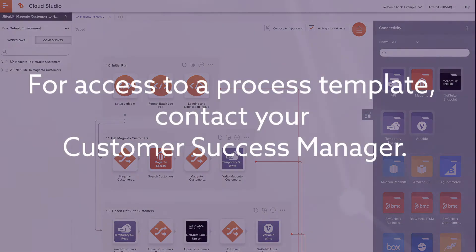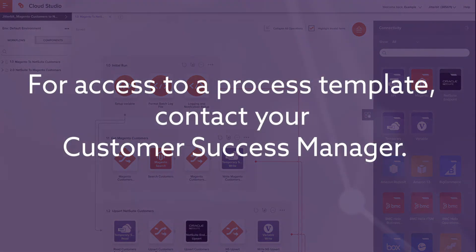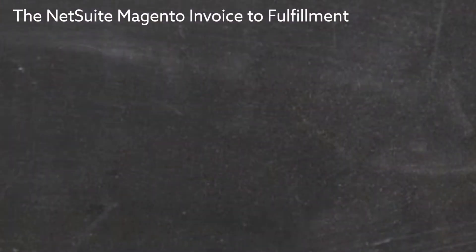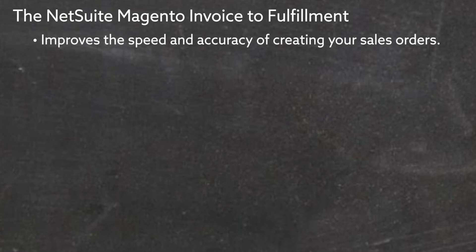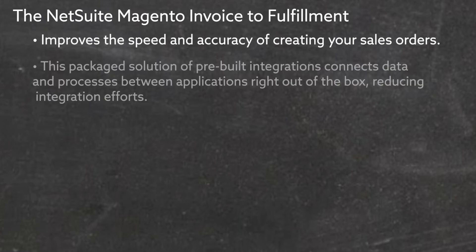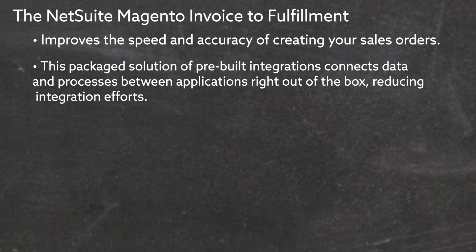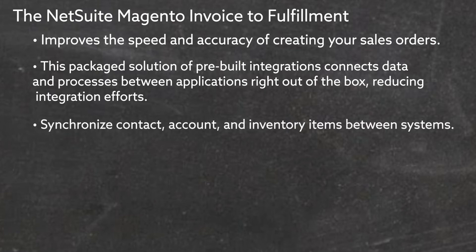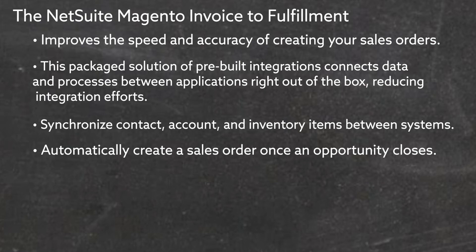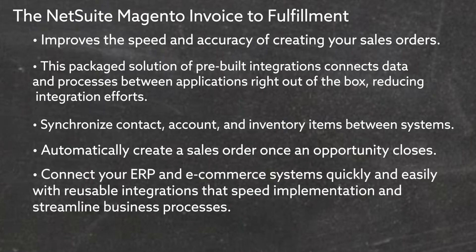For access to a template, contact your customer success manager. The NetSuite Magento invoice to fulfillment process template improves the speed and accuracy of creating your sales orders. This package solution of pre-built integrations connects data and processes between applications right out of the box, reducing integration efforts. Synchronize contact, account, and inventory items between systems. Automatically create a sales order once an opportunity closes. Connect your ERP and e-commerce systems quickly and easily with reusable integrations that speed implementation and streamline business processes.